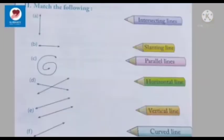Children, now look at the given pictures. There are some lines shown. Match the following lines with their correct names: intersecting lines, slanting line, parallel line, horizontal line, vertical line, and curved line. Do it now.